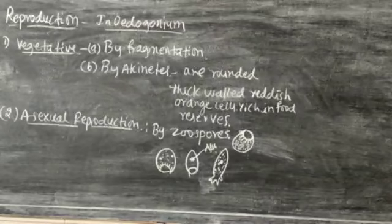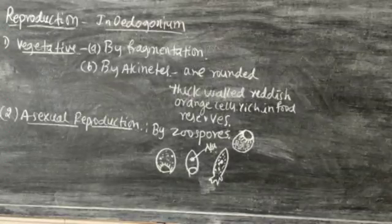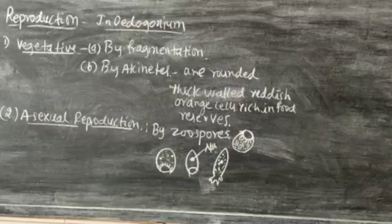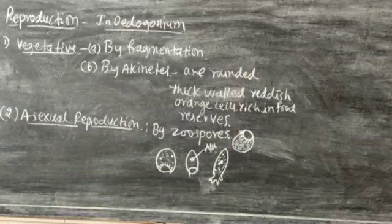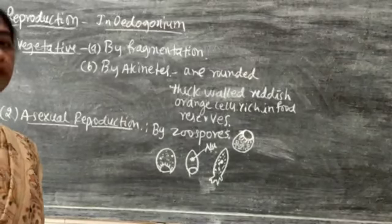Coming to reproduction in Oedogonium. Here the mode of reproduction in Oedogonium is different types: vegetative reproduction, asexual reproduction, and sexual reproduction.